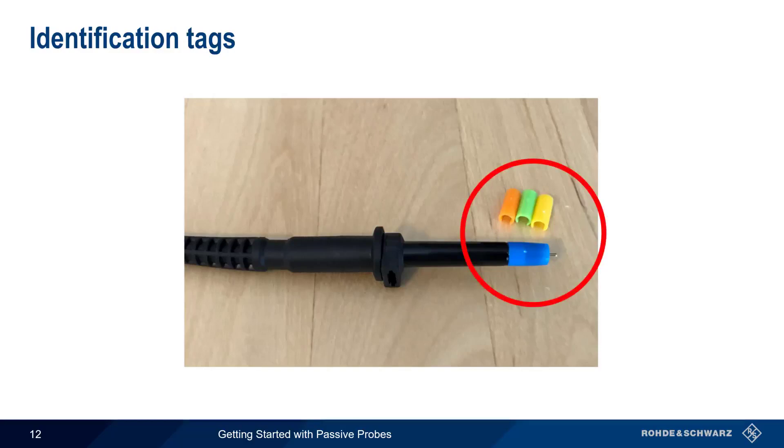Colored identification tags are helpful when using multiple probes, since they allow us to easily color code probes and scope channels. These tags may be in the form of a tube, as shown here, or in the form of simple rings.